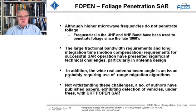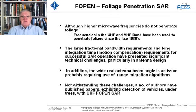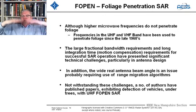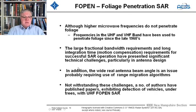Now let's switch to a completely different technology: foliage penetration radars with synthetic aperture technology. High-frequency microwaves don't penetrate foliage, but UHF and VHF have been used to penetrate foliage since the late 1960s. Some were developed to see through the triple canopy in Vietnam down to the ground. All the vegetation at UHF and VHF acts like a lossy dielectric, and that's how you can model it. The large fractional bandwidth requirements and long integration times for motion compensation present significant technical challenges, particularly in antenna design.